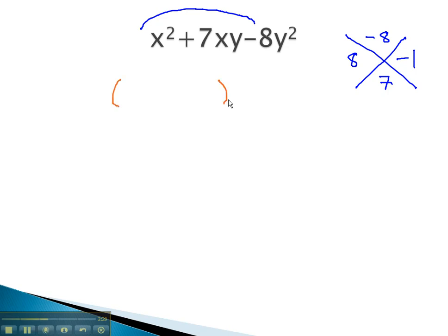We can now quickly build our factors, just filling in the variables. We use x and a positive 8, and x and the negative 1 from the end. However, we must be careful that all the variables are accounted for. We want to end up with the y squared at the end, which means we also need to have y's in our factors, 8y and negative 1y.